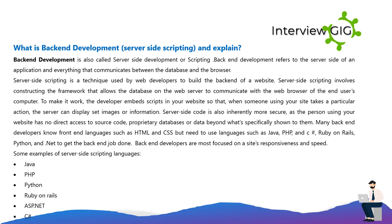Many back-end developers know front-end languages such as HTML and CSS, but need to use languages such as Java, PHP, C#, Ruby on Rails, Python, and .NET to get the back-end job done. Back-end developers are most focused on the site's responsiveness and speed. Examples of server-side scripting languages include Java, PHP, Python, Ruby on Rails, ASP.NET, and C#.